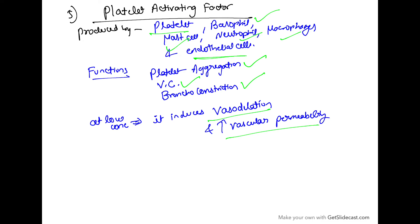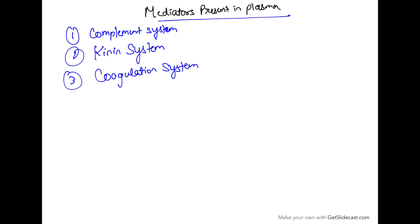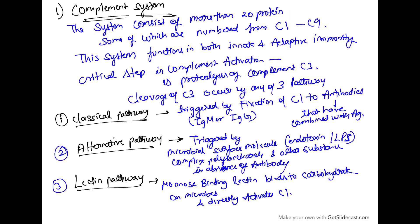This concludes the cellular mediators. Now let us look at plasma mediators, of which there are three types: the complement system, the kinin system, and the coagulation system. The complement system consists of more than 20 proteins, some numbered C1 to C9, and plays a role in both innate and adaptive immunity.